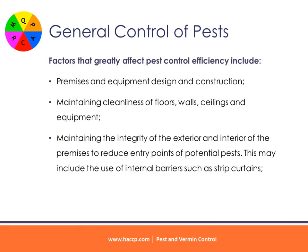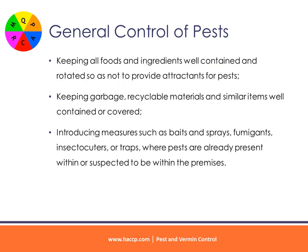Factors that greatly affect pest control efficiency include: premises and equipment design and construction; maintaining cleanliness of floors, walls, ceilings and equipment; maintaining the integrity of the exterior and interior of the premises to reduce entry points of potential pests — this may include the use of internal barriers such as strip curtains; keeping all foods and ingredients well contained and rotated so as not to provide attractants for pests; and keeping garbage, recyclable materials and similar items well contained or covered.